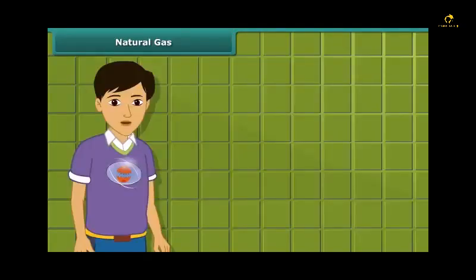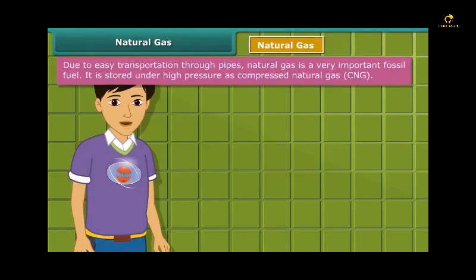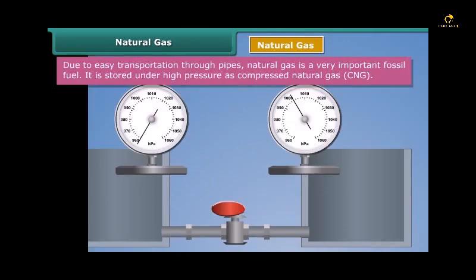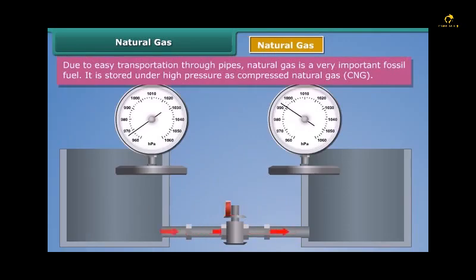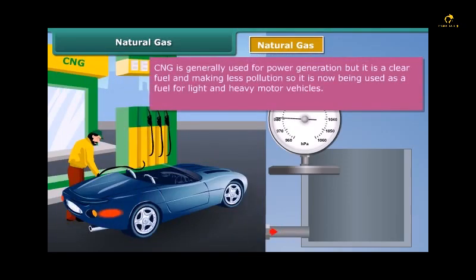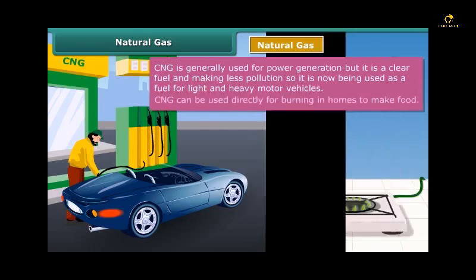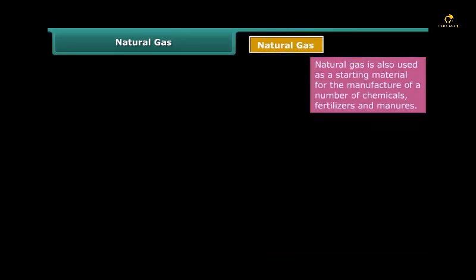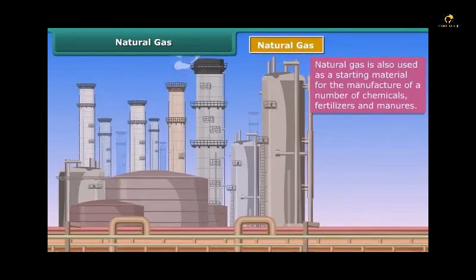Let's move on to our next exhaustible natural resource: natural gas, also known as compressed natural gas or CNG. It is stored under high pressure as CNG. CNG is generally used for power generation, but due to being less polluting, it is also being used as a fuel for vehicles and for cooking. Natural gas is also used as a base material for the manufacture of a number of chemicals and fertilizers.